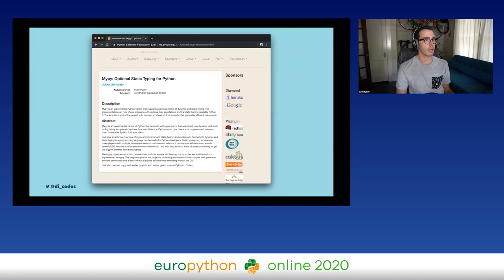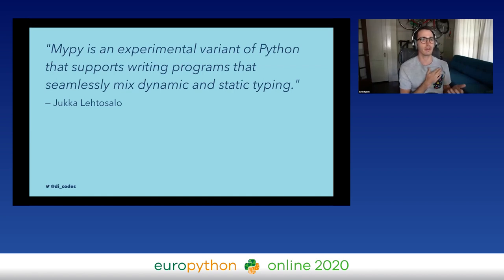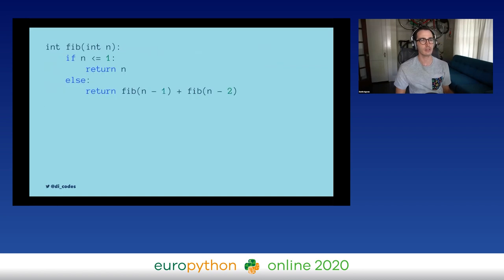In 2013 at PyCon US, he introduced something called MyPy. At the time, MyPy was described as an experimental variant of Python that supports writing programs that mix dynamic and static typing. In his research, he wasn't able to use Python as the language, so instead he created his own variant — which makes sense since he could create a variant just to prove his theories. He actually called the variant MyPy.